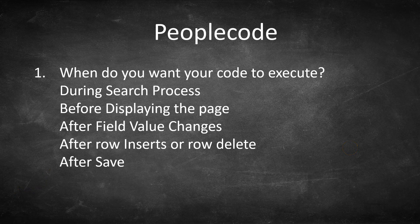For example, if the requirement is that when a user searches on the Add/Update PO page they must enter at least five characters as a search string, that requirement falls under the search general area. Another example: if you want to restrict the user to adding only four lines per PO, that falls under the row actions general area, so you would use either the row insert or row delete event.